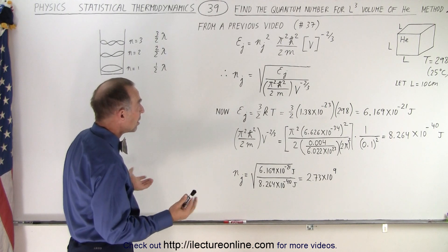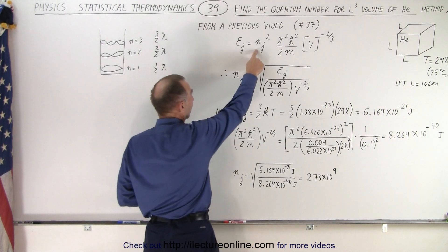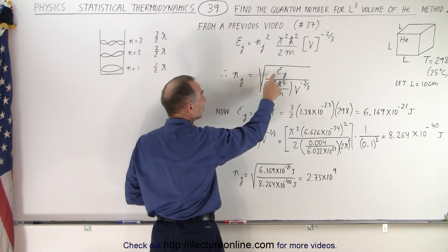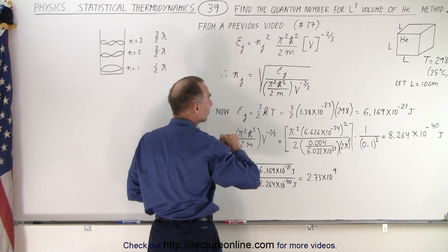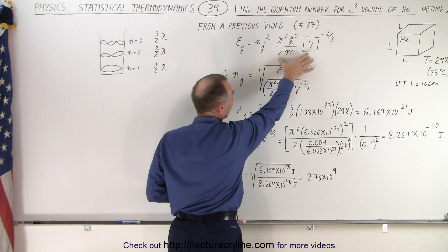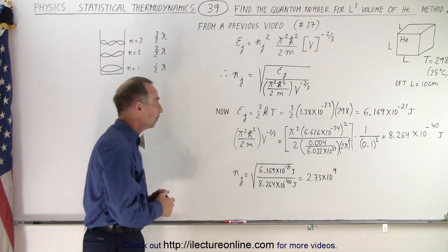So what we need to do now is solve this equation for the quantum number, and then we need to find the energy of that particular particle in that state, and divide by the right side of that equation.